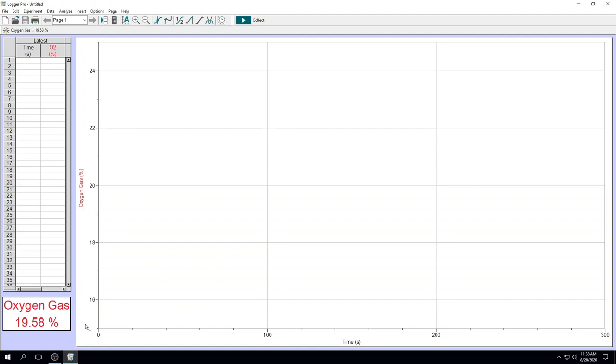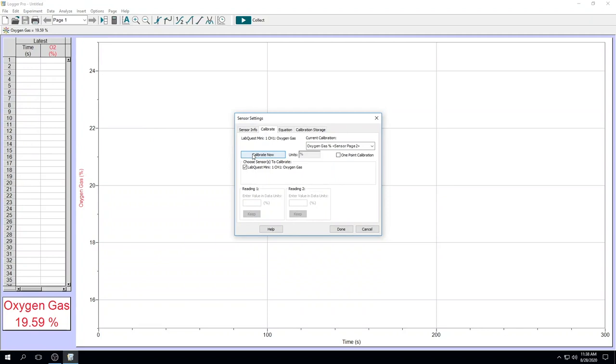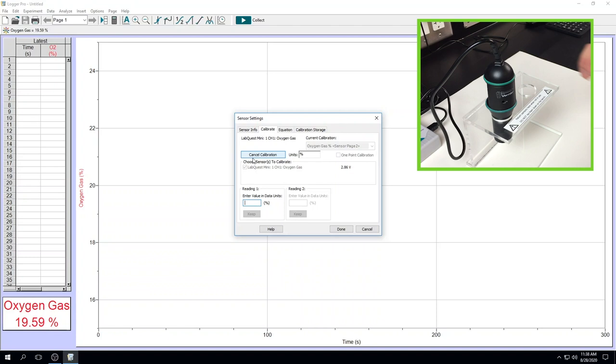For the first part, under experiment, calibrate, click calibrate now. In the first reading, using the provided wooden stick, we press into the hole in your oxygen sensor. At this point, you would see the voltage on your screen decrease to close to zero.